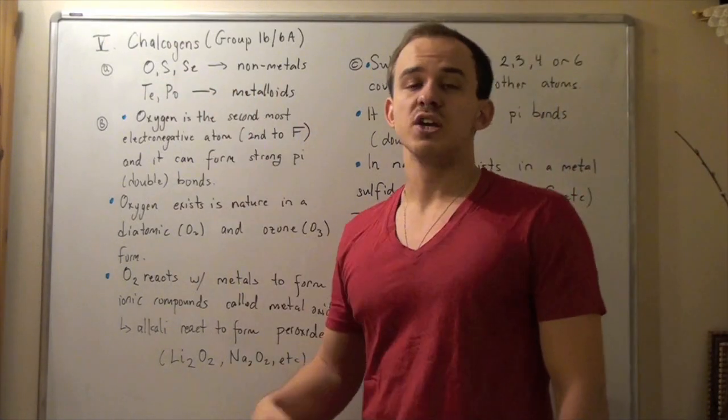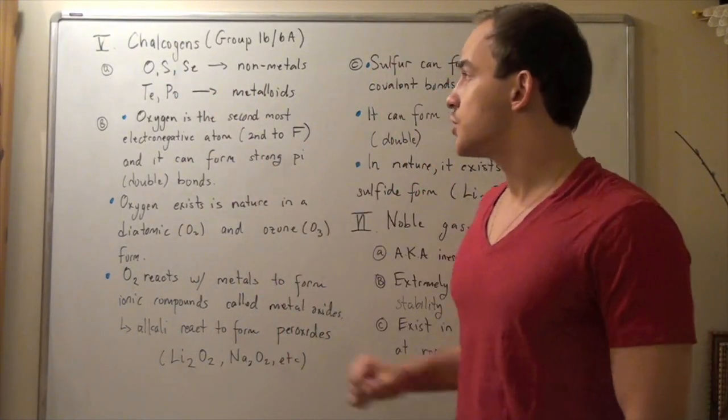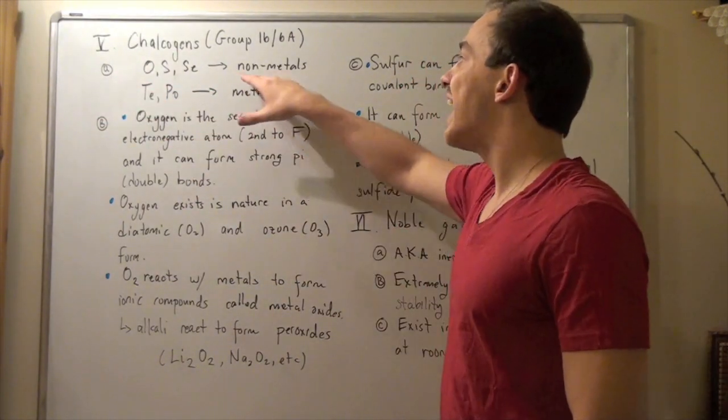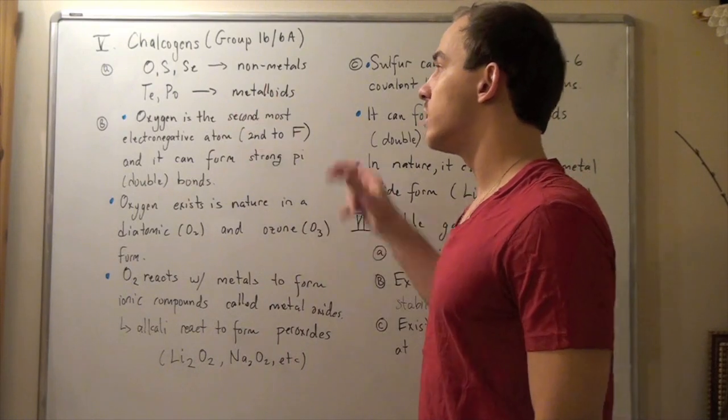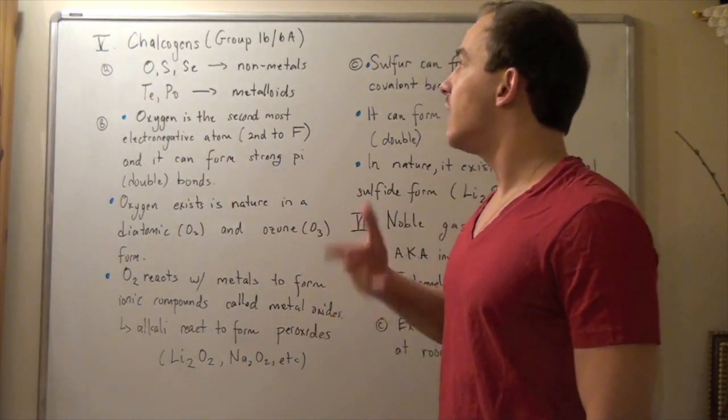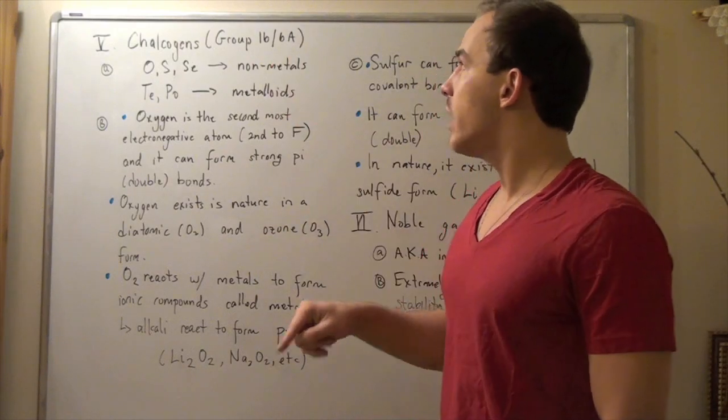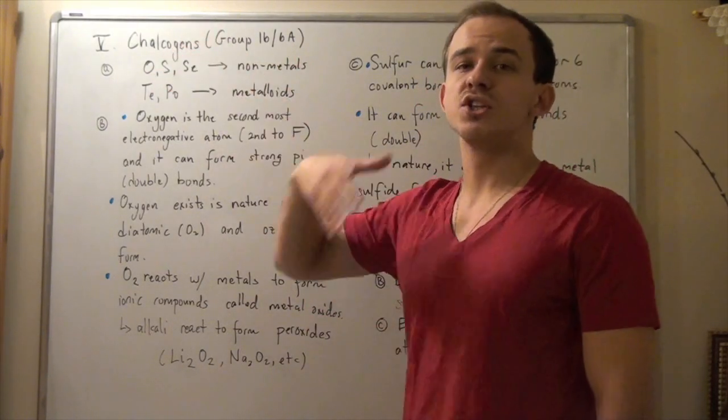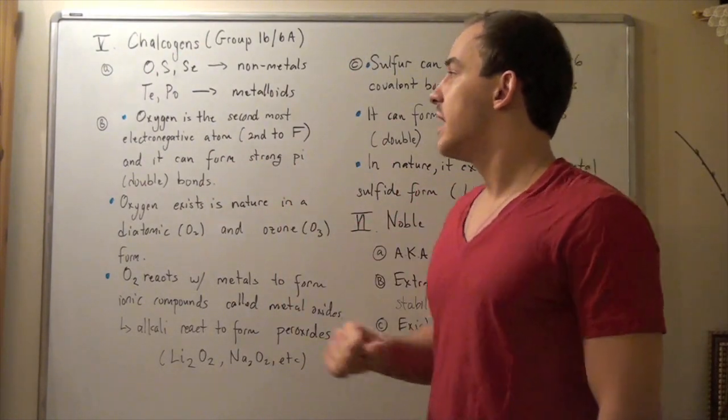Let's begin with our Chalcogens. There are five main Chalcogens: oxygen, sulfur, and selenium are all nonmetals, while the metalloids are polonium and tellurium. Unlike groups 5A and 4A which both have metals, group 6A, or the Chalcogens, don't have any metals.